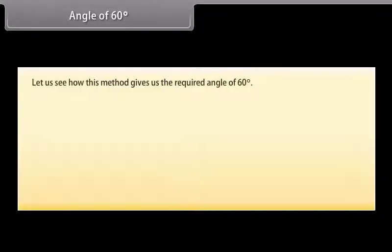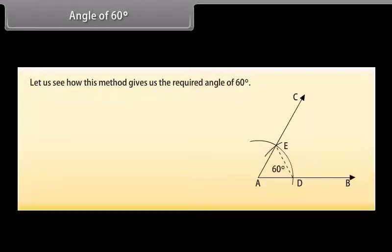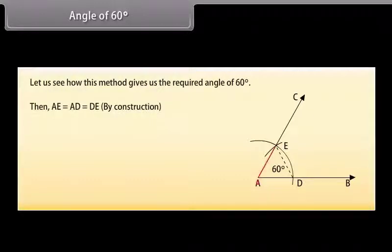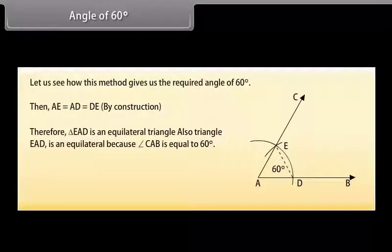Let us see how this method gives us the required angle of 60 degrees. Join DE. By construction, AE is equal to AD which equals DE. Therefore, triangle EAD is an equilateral triangle, and so angle CAB is equal to 60 degrees.